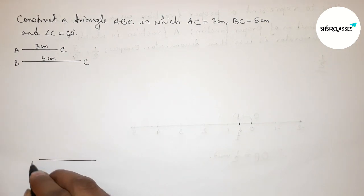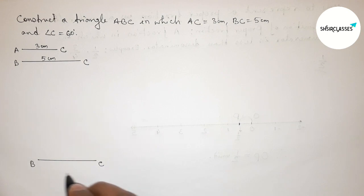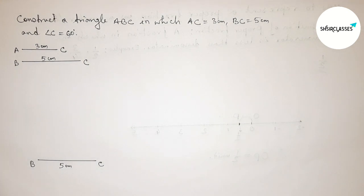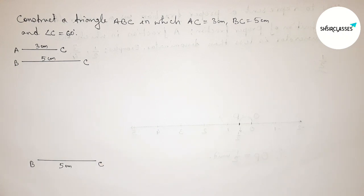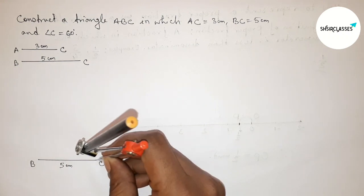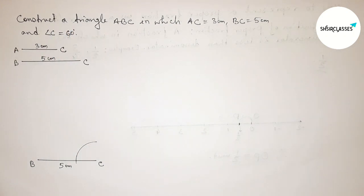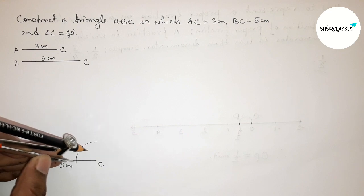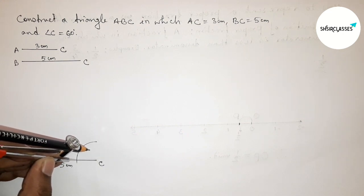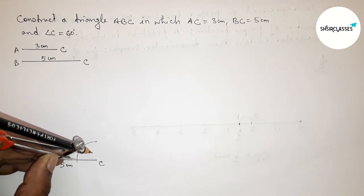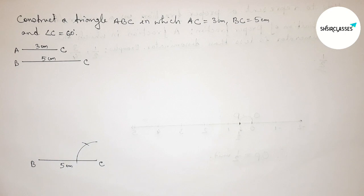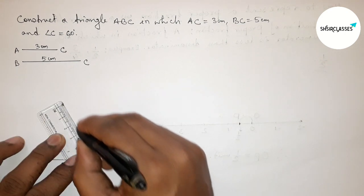Taking point B and point C, so BC is 5 centimeters. Now drawing a 60 degree angle at point C. Putting the compass on point C, taking any length, and drawing an arc. Then putting the compass at that arc point, taking the same length, and cutting another arc to construct the 60 degree angle.